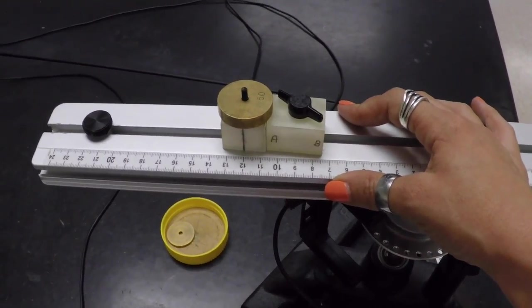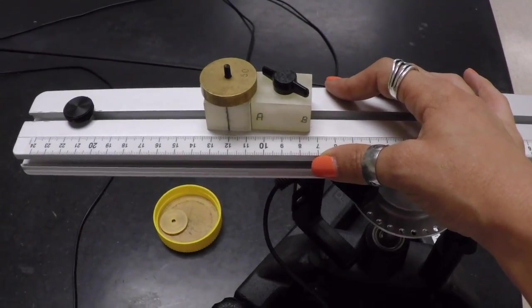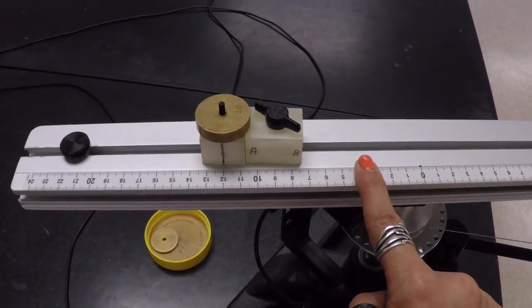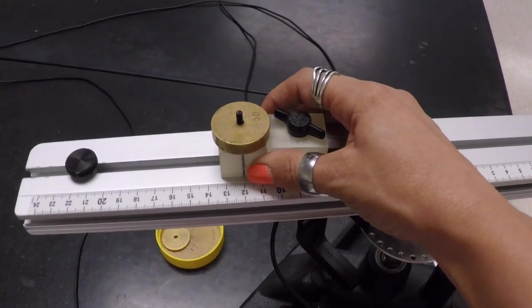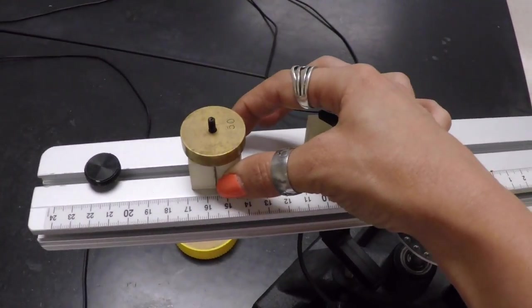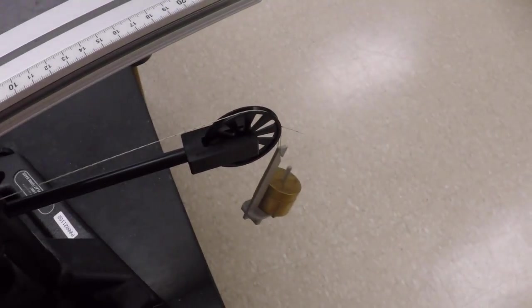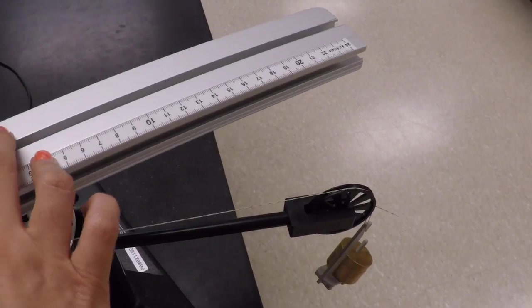So before you start recording data, you need to log into the student account and open the experiment on centripetal force and acceleration. Then on three you're going to let this go and start recording data. Once this mass breaks away from the magnet, you will wait for the falling mass to reach the floor and then to stop, and then you will stop recording the data.